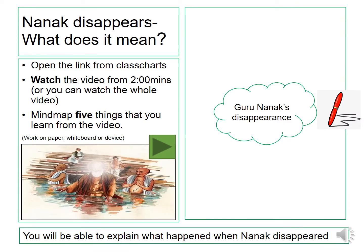As you know by now, Guru Nanak disappeared — but what does it mean? I want you to open up the link on Class Charts to the YouTube video. You're going to watch the video from two minutes and create a mind map that looks like the one on the right hand side. It's going to be called Guru Nanak's Disappearance, and I want you to mind map five things that you learnt from the video.